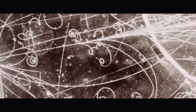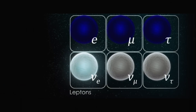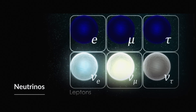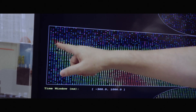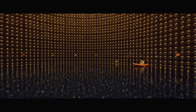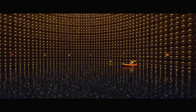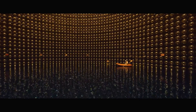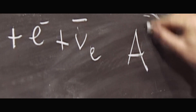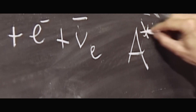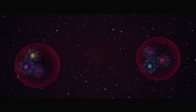The lightest of the matter particles are the elusive neutrinos. We know their masses are not zero, thanks to the discovery of neutrino oscillations. But those masses are so small we haven't been able to measure them directly, and they cannot be explained by the Higgs mechanism without adding extra particles or mechanisms to the standard model.